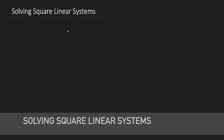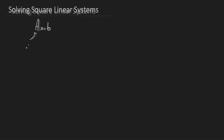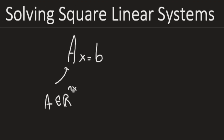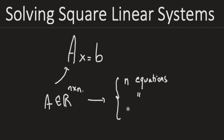Let's talk about how to solve square linear systems. Square meaning that the coefficient matrix A is square — that is, of size n by n. That also means we've got the same number of equations as we have unknowns. The number of unknowns is equal to the number of equations.